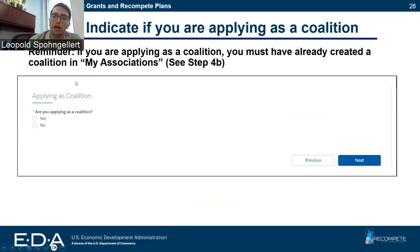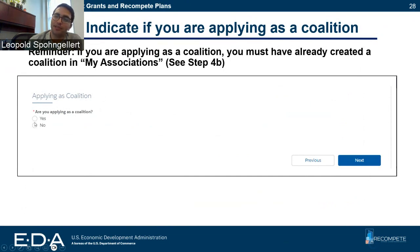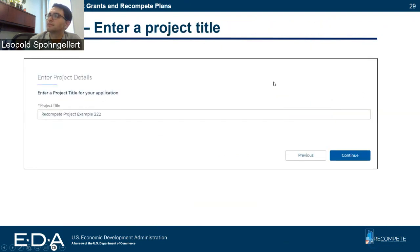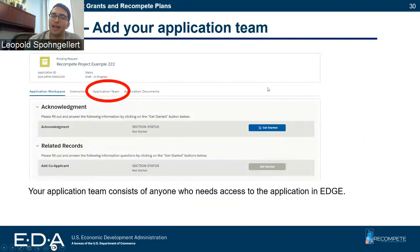Once you select which opportunity you're applying to, you're going to have to indicate if you're applying as a coalition. If you are applying as a coalition, you select yes and it should be able to identify the coalition you created earlier. If you're just a single lead applicant, you can select no. Then you're going to enter a title for your project, and now you've started an application.